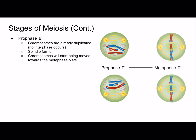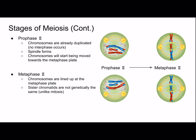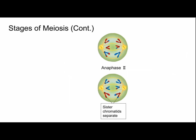Then we have metaphase II, where chromosomes are lined up at the metaphase plate. Sister chromatids are not genetically the same, unlike in mitosis — in mitosis we are separating sister chromatids, but here they are not identical because of crossing over. Next, in anaphase II, sister chromatids are separated and pulled to opposite ends of the cell.